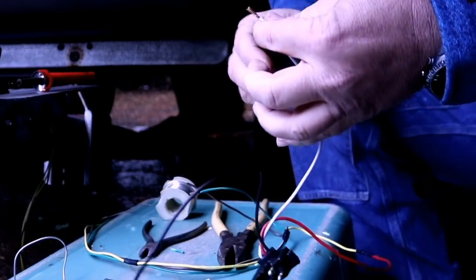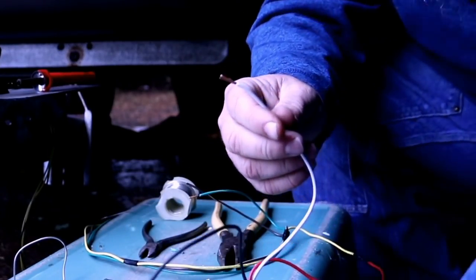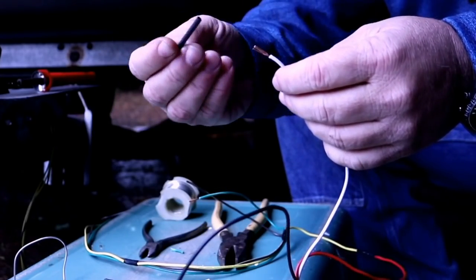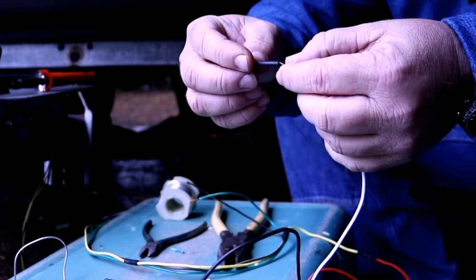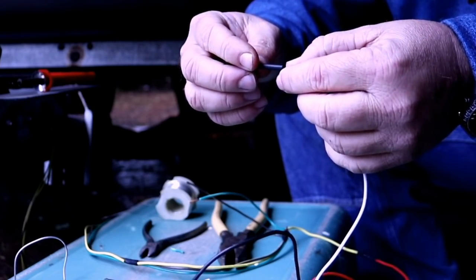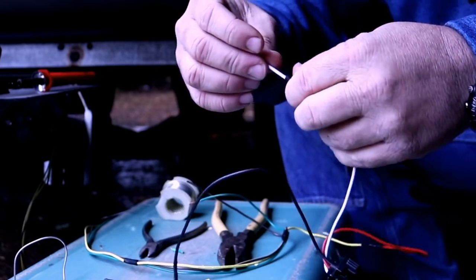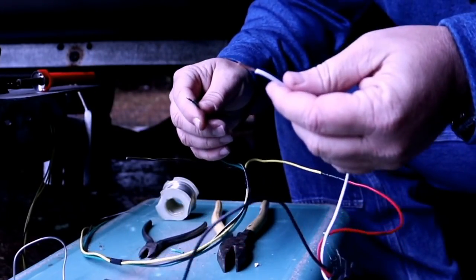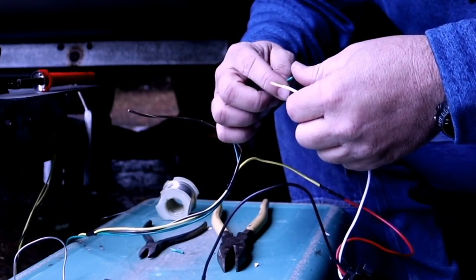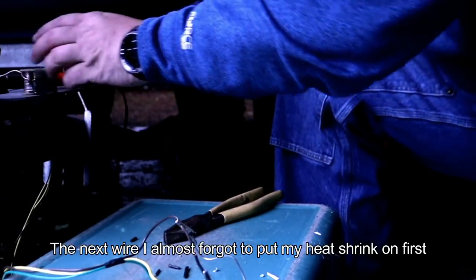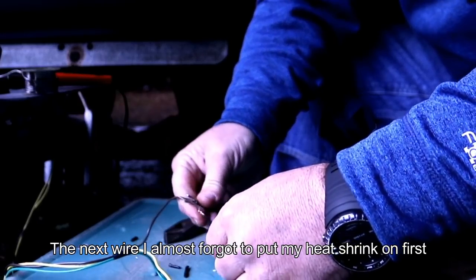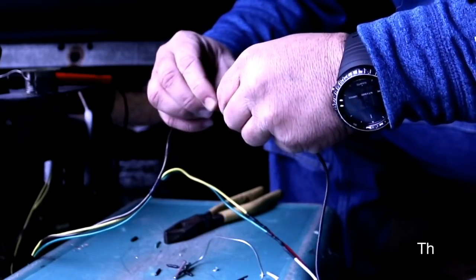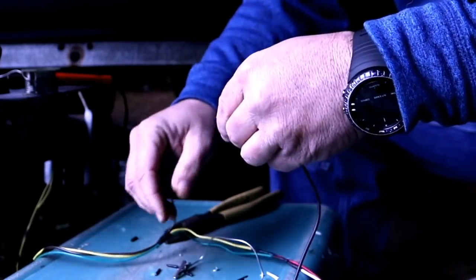Alright, and then here's a very important step you don't want to skip. You want to get your heat shrink, if you're using heat shrink - I like to use it - and put it over one of the wires before you solder them together. Because if you solder them before you put it on, you can't use it obviously. See what I did there? You don't want to start soldering before you get your heat shrink on. That'd be bad.